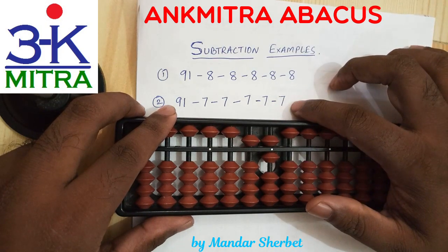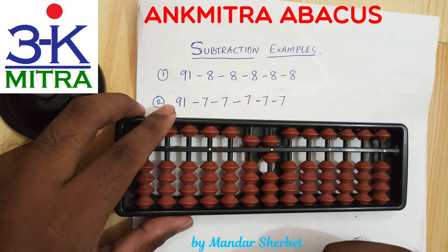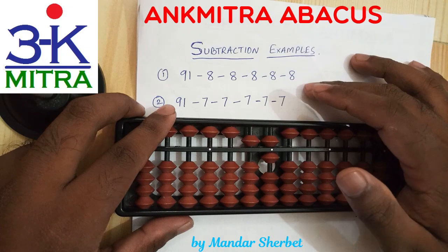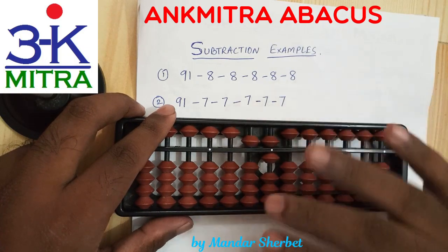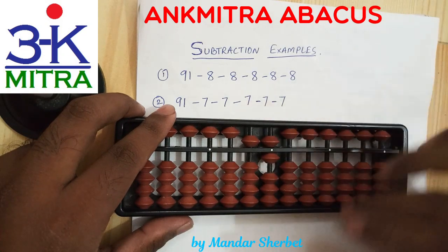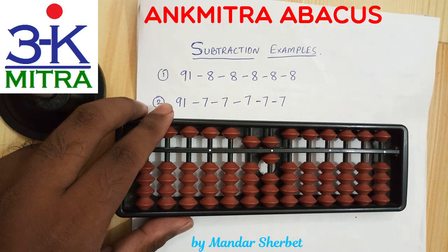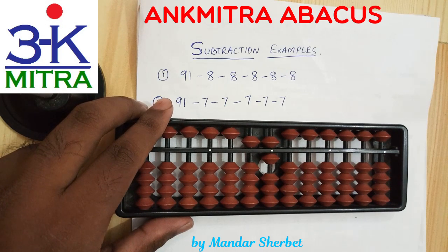The answer after subtracting the digit 7 five times from 91 is 56. I hope the three different situations that we encounter while subtracting these digits have been clearly explained through these examples. I hope this method is clear and you find it useful in your regular practice. Please do provide your feedback on this video — I'll be eagerly waiting to read it. Thank you.